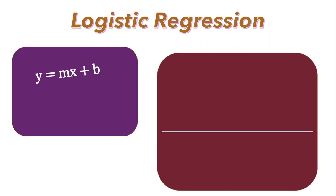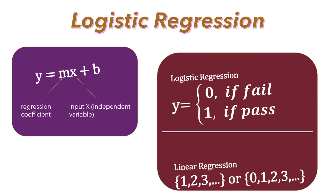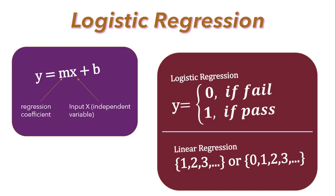Logistic regression uses an equation as the representation, very much like linear regression, where input values x are combined linearly using weights or coefficient values to predict an output value y. The key difference from linear regression is that the output value being modeled is a binary value — either 0 or 1 — rather than a numeric value. It is an extension of the linear regression model for classification problems and mostly used for binary classification.